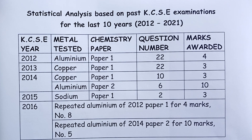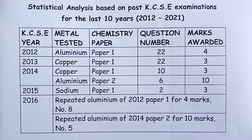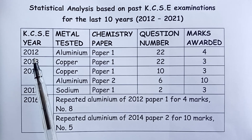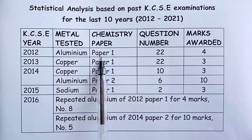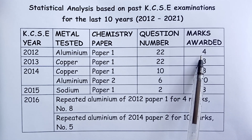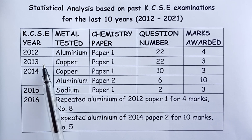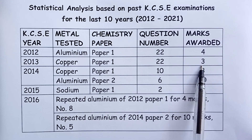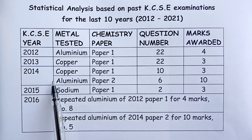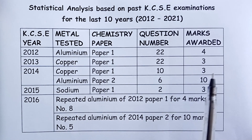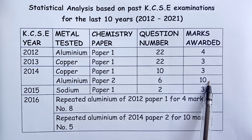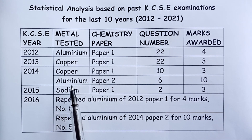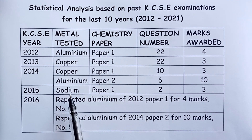Now to some statistical analysis based on past KCSE examinations for the last 10 years. The most important thing I want our students to realize is that over these years, the topic of metals rarely misses. For instance, in 2012 aluminium was tested in paper 1, question number 22, for 4 marks. In 2013, copper was tested in paper 1 for 3 marks. In 2014, the topic was tested twice: paper 1 had a 3-mark question, and paper 2 had a 10-mark question covering copper and aluminium respectively. In 2015, sodium was tested in paper 1 for 3 marks.